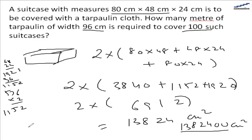We have to divide 1,382,400 by 96 to find the length of tarpaulin required. Since the width is in centimeters, we also need to divide by 100 to convert to meters. Therefore, we will require 144 meters of tarpaulin cloth.